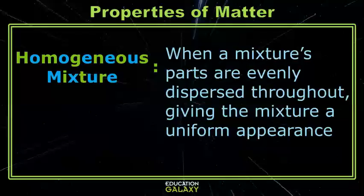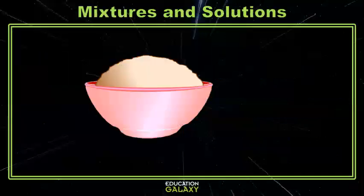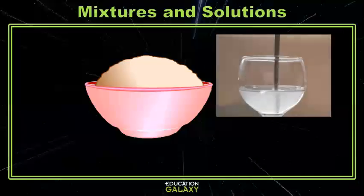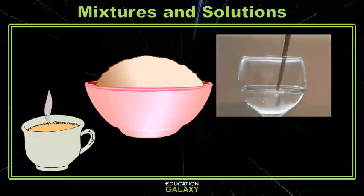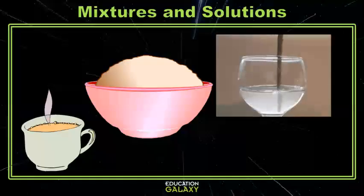Homogeneous mixtures have a uniform appearance because the mixture's parts are evenly dispersed throughout. These mixtures look like a single substance. Cake batter is a really great example of a homogeneous mixture. You've mixed things together, like eggs, flour, and sugar, but it has one uniform look to it in the bowl and you can't pick out any individual substance. Adding sugar into water or adding milk into your coffee are also homogeneous mixtures, but sometimes homogeneous mixtures are also solutions.